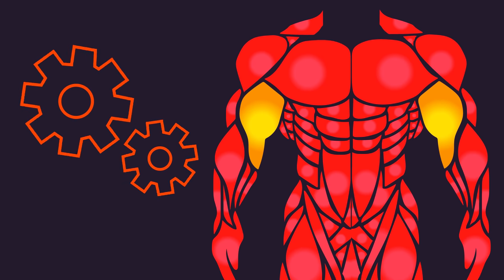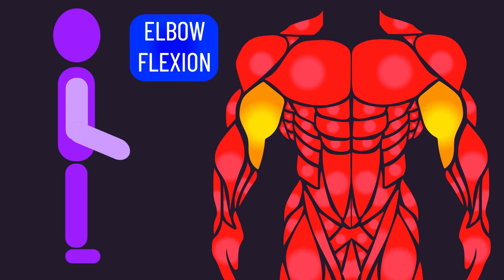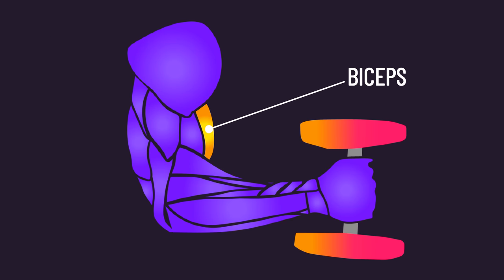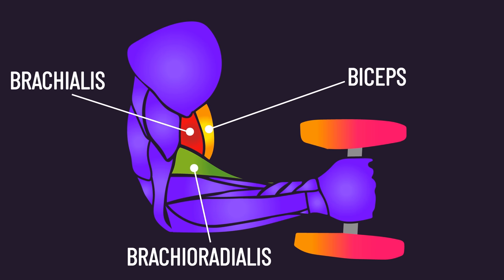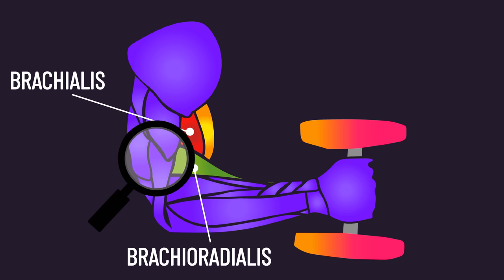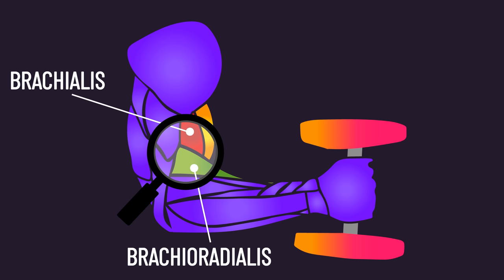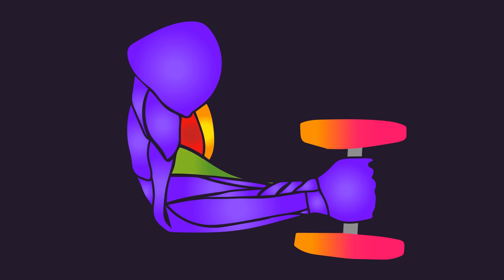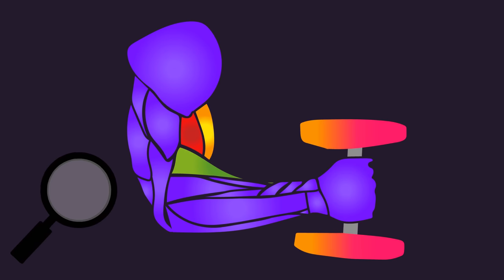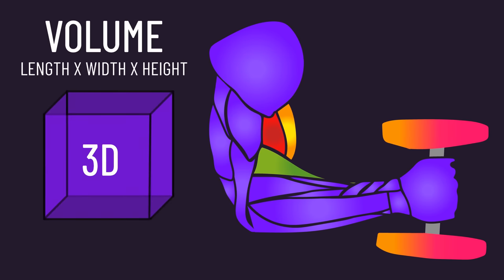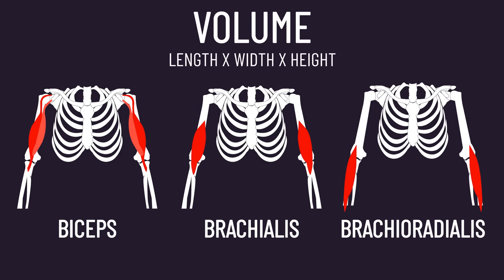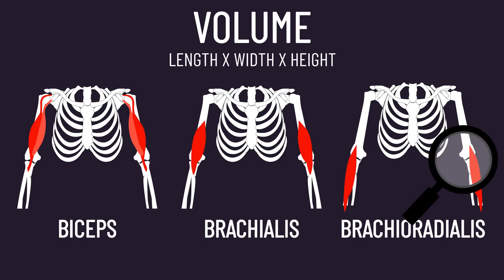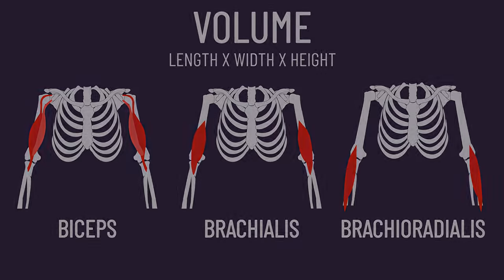Most of you know one main function of the biceps is elbow flexion. But the biceps are just one of three muscles contributing to elbow flexion — the others being the brachialis, found beneath the biceps, and the brachioradialis, found mainly across the forearm. An interesting question is how do the sizes of these elbow flexor muscles compare? Exploring research measuring muscle volume with MRI provides a more accurate insight. I came across six studies that have done this.